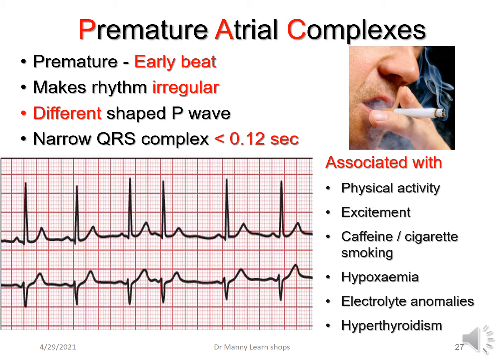Premature atrial complexes are premature — meaning they're early — and because they're early, they make the rhythm irregular. They have a different shape P-wave because they're not coming from the SA node. However, conduction is normal through the ventricles, so the QRS complex will be narrow, less than 0.12 seconds. They're typically associated with physical activity, excitement, drinking coffee, and cigarette smoking. In abnormal situations: hypoxemia, electrolyte anomalies such as calcium, potassium, or magnesium problems, and they can be related to hypothyroidism.